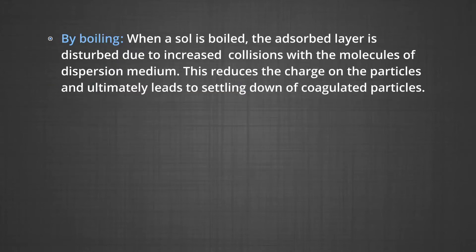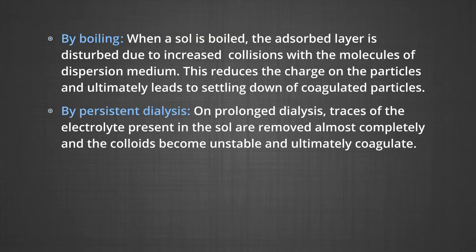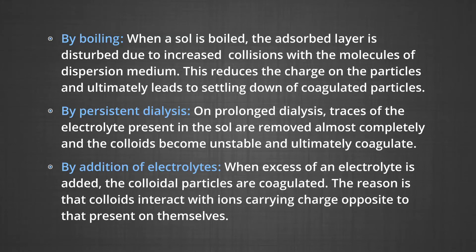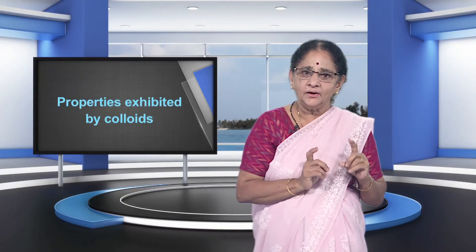Number three, by boiling: when a sol is boiled, the adsorbed layer is disturbed due to the increased collisions with the molecules of dispersion medium, which reduces the charge on the particles and ultimately leads to settling down of coagulated particles. Number four, by persistent dialysis: on prolonged dialysis, traces of the electrolyte present in the sol are removed almost completely, and the colloids become unstable and ultimately coagulate. Number five, by addition of electrolytes: when excess of an electrolyte is added, the colloidal particles are coagulated. The colloids interact with ions carrying charge opposite to that present on themselves, causing neutralization leading to coagulation. The ion responsible for neutralization of charge on the particles is called the coagulating ion.